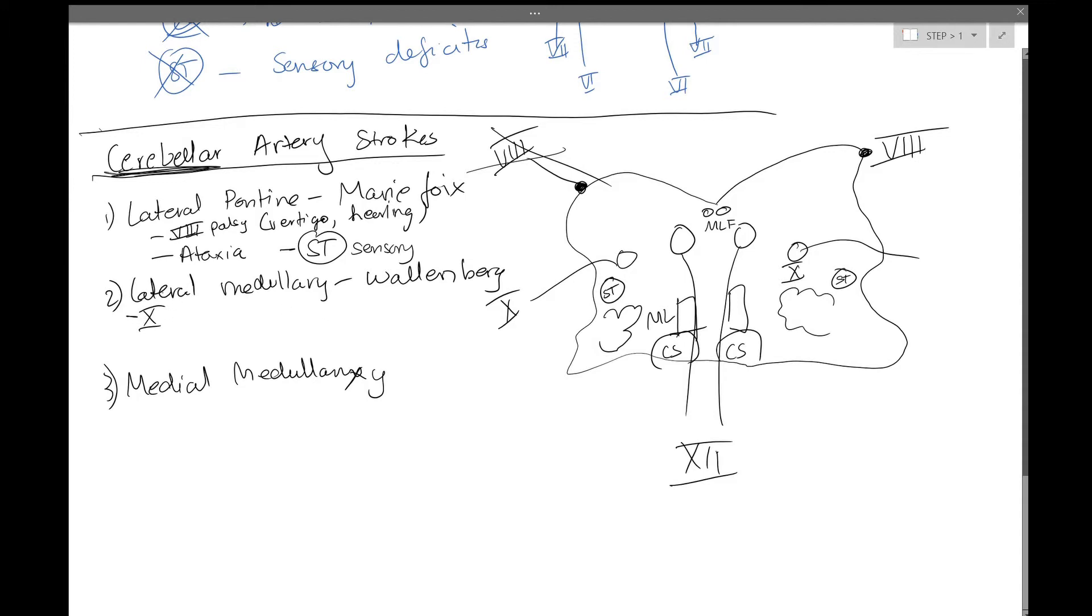Wallenberg is the interesting one. The telltale giveaway here is going to be cranial nerve 10 palsy, which presents as hoarseness and dysphagia. Along with this, you're also going to have some ataxia, because it is again, a cerebellar artery.